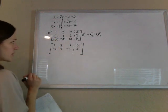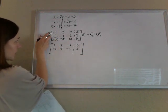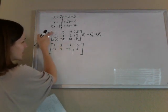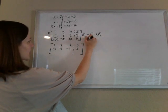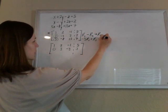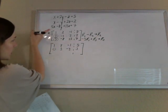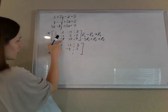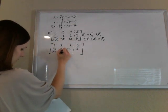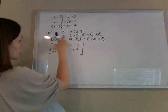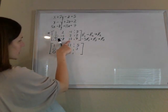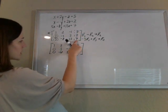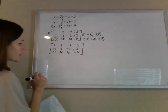I can get this zero at the same time by doing negative 5 times row 1 plus row 3. So if I do negative 5 times row 1 plus row 3 to make my new row 3, I'll get negative 5 plus 5 is 0. Negative 10 minus 8 is negative 18. Alright, 5 plus 13 is 18. Negative 25 plus 7 is negative 18. Wonderful.